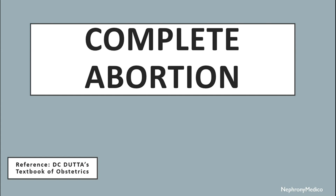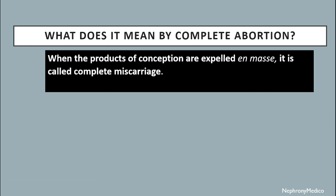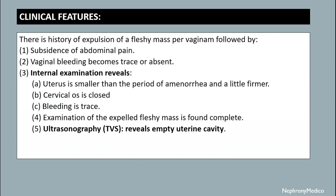Let's talk about complete abortion. When the products of conception are expelled in entirety, it is called complete miscarriage or complete abortion. Clinical features include a history of expulsion of a fleshy mass per vaginum, which is followed by subsidence of abdominal pain, and the vaginal bleeding becomes scanty or absent.